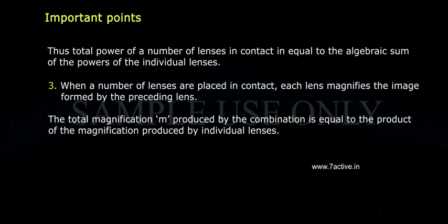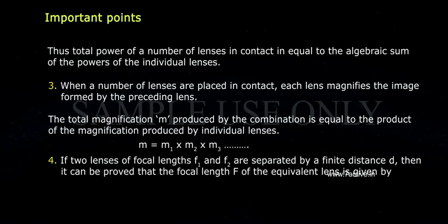Therefore, the total magnification M produced by the combination is equal to the product of the magnification produced by individual lenses. M equals to M1 into M2 into M3, and so on.